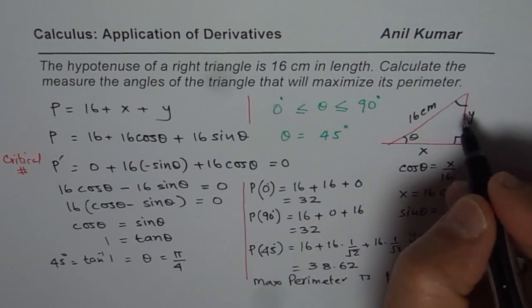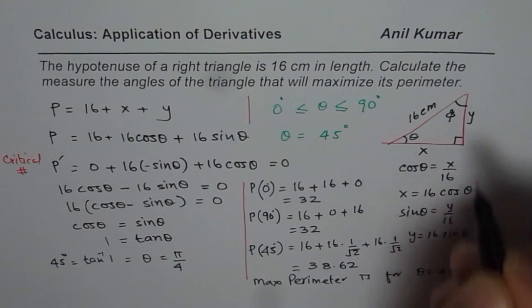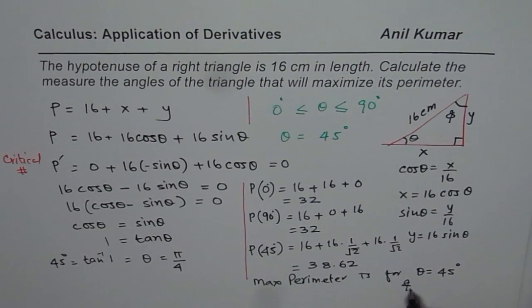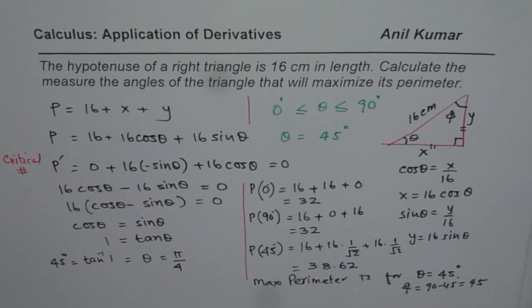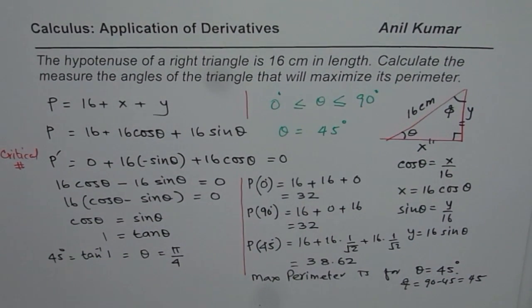So obviously, the other angle, let us say, which is phi, will also be 90 minus 45 degrees, same angle. So, in this case, the triangle should be isosceles right triangle for maximum perimeter.